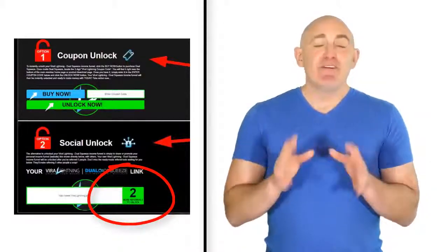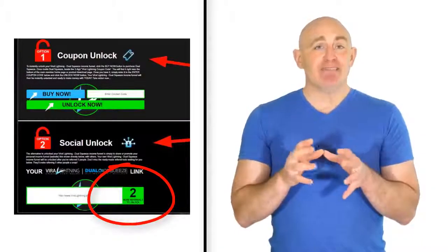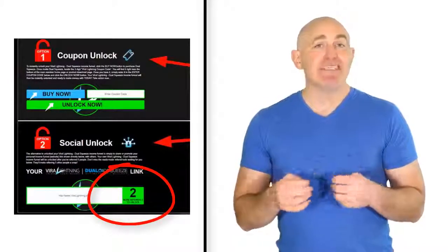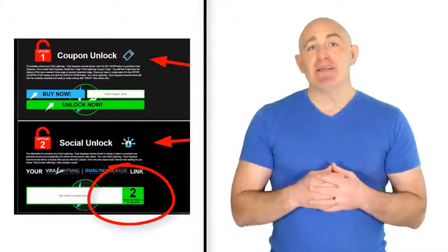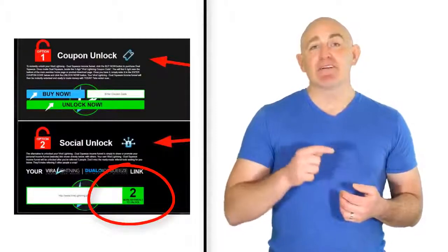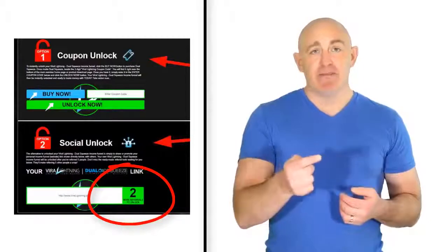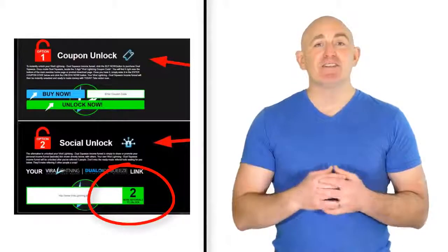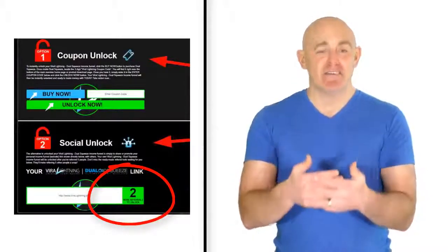For example, if you set your VL campaign such that five referrals are required to complete the social unlock feature, every participant in your campaign who chooses social unlock will have to refer five people to your funnel. After which, our Viral Lightning software automatically unlocks their funnel. So,